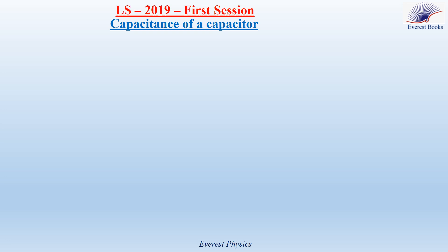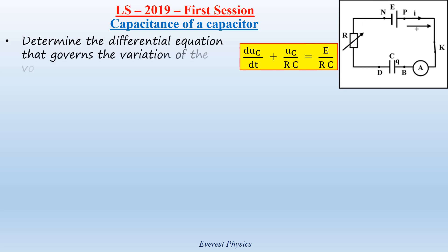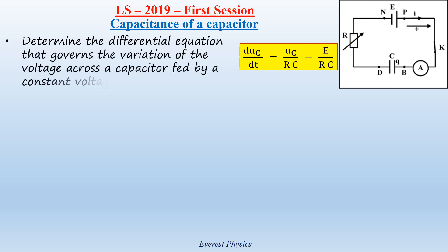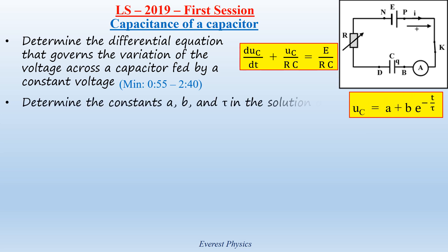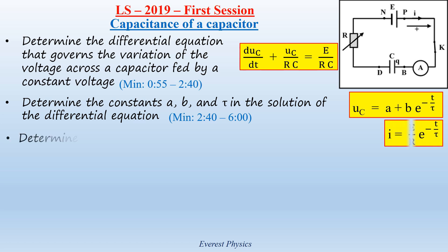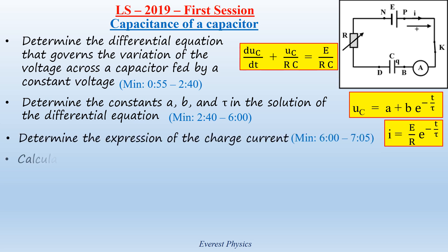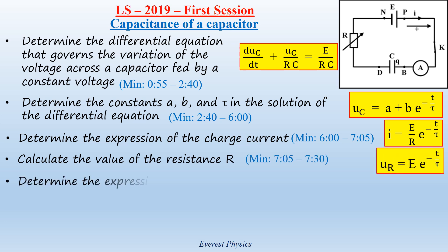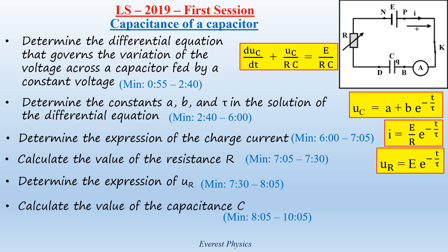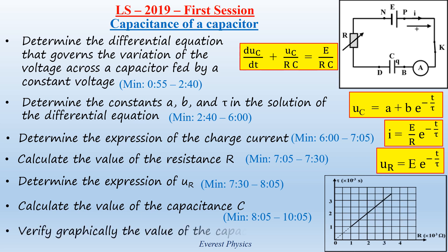In this solved official exercise, we are going to determine the differential equation that governs the variation of the voltage across a capacitor fed by a constant voltage. Determine the constants A, B, and tau in the solution of the differential equation. Determine the expression of the charge current. Calculate the value of the resistance R of the rheostat. Determine the expression of the voltage UR across the rheostat. Calculate the value of the capacitance C. Verify graphically the value of the capacitance C.